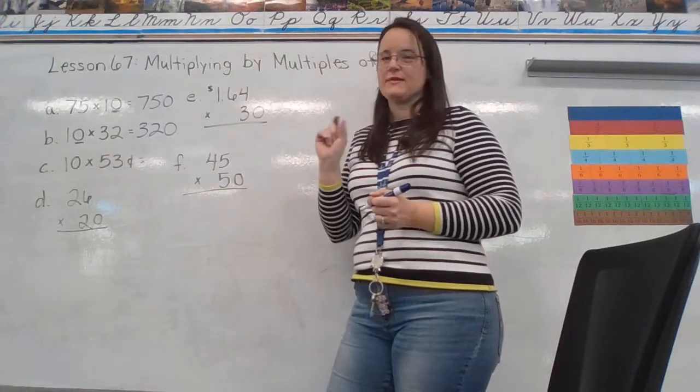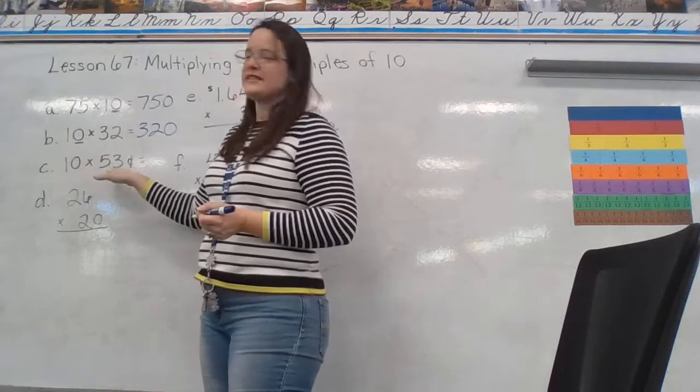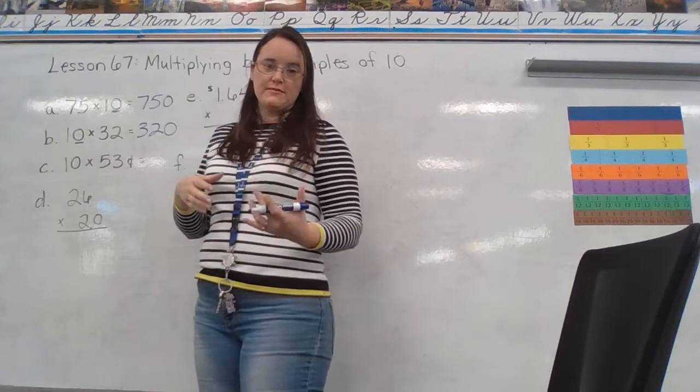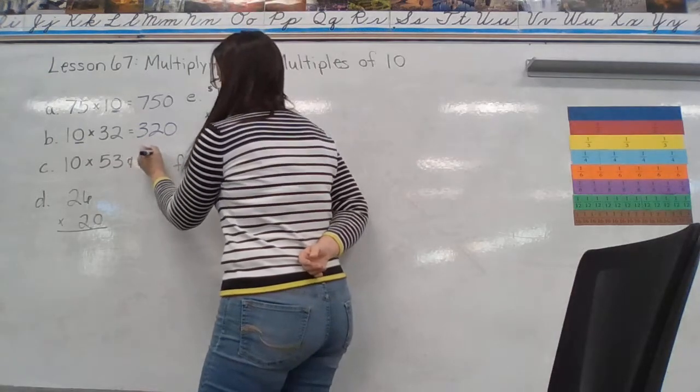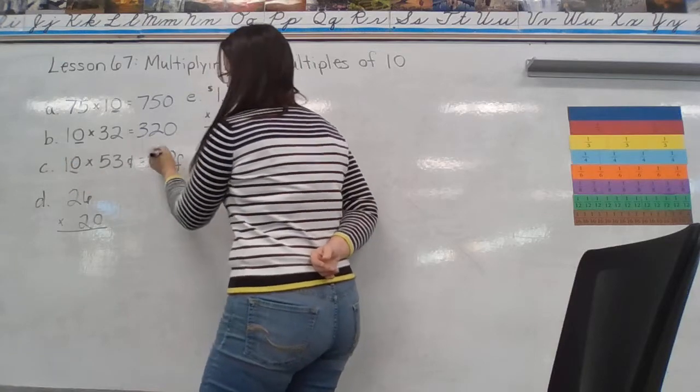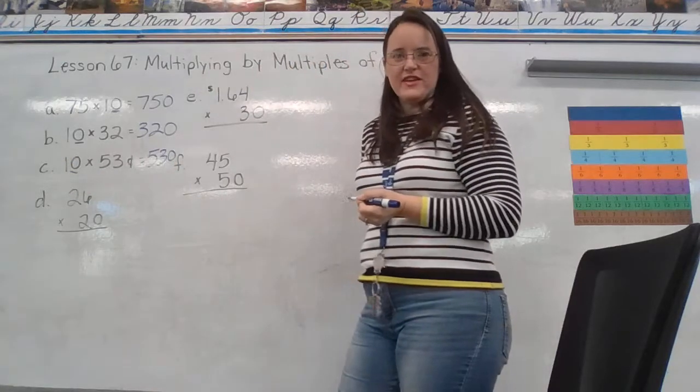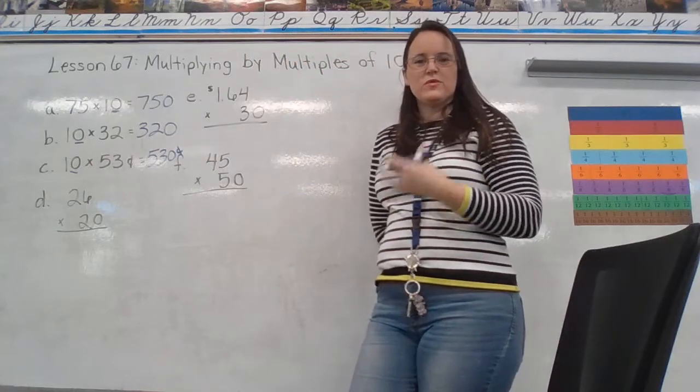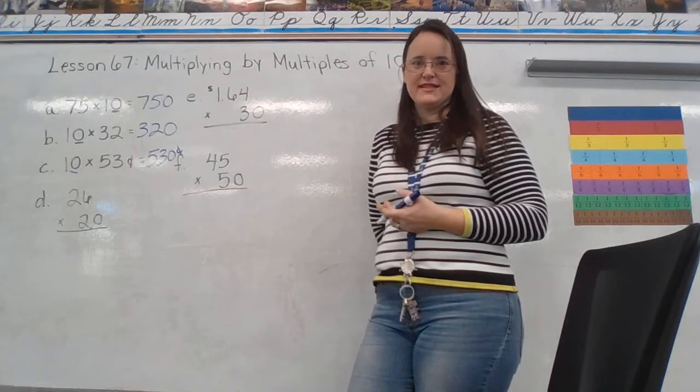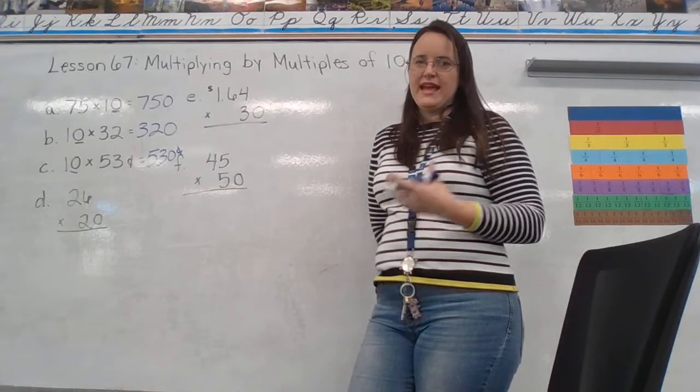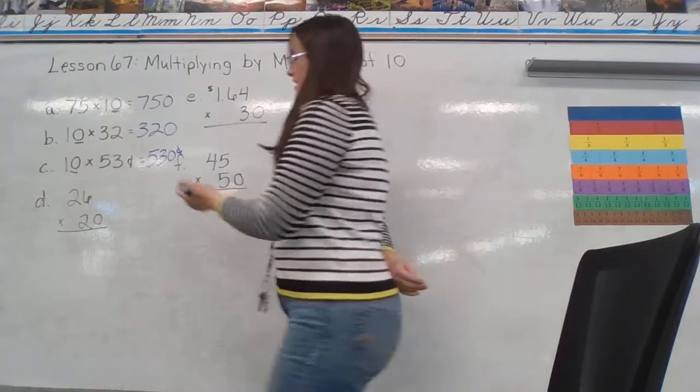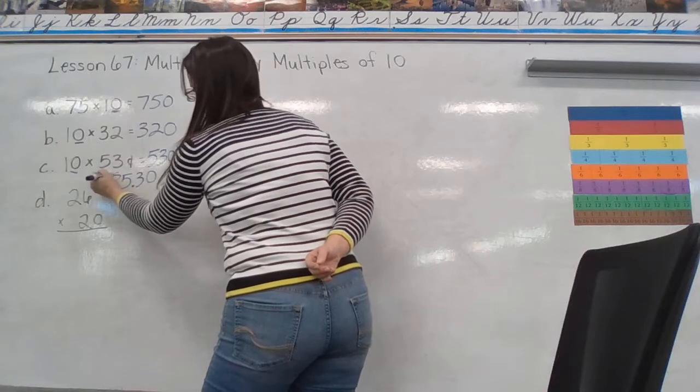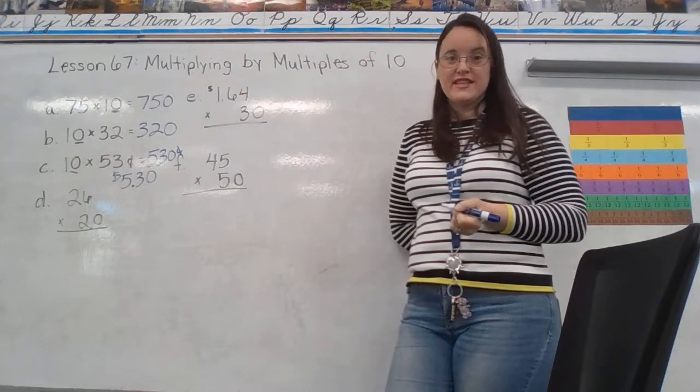So, this one switches it up just a little bit. We have 10 times 53 cents. So, 53 times 1 gives us 53. And we have a 0 that we're going to tack on. But this is 530 cents. We don't want to leave it like that. How would we rewrite 530 cents? We would rewrite it as dollars and change. And so, 530 cents is the same thing as $5.30.